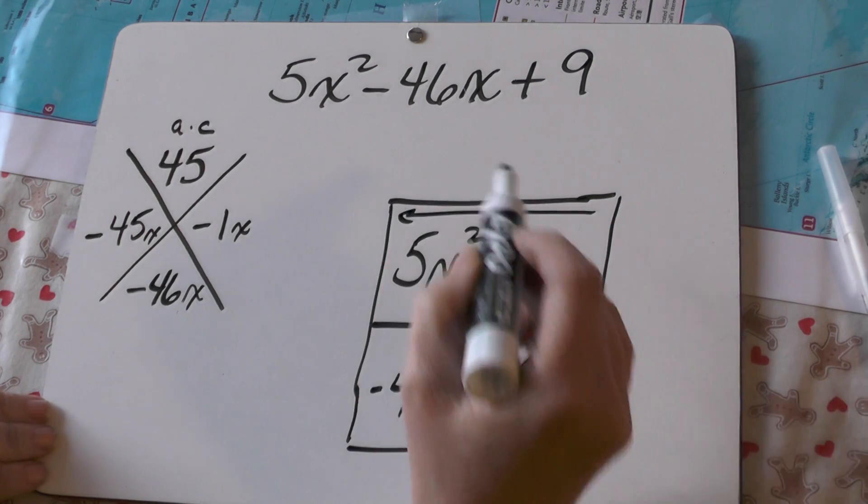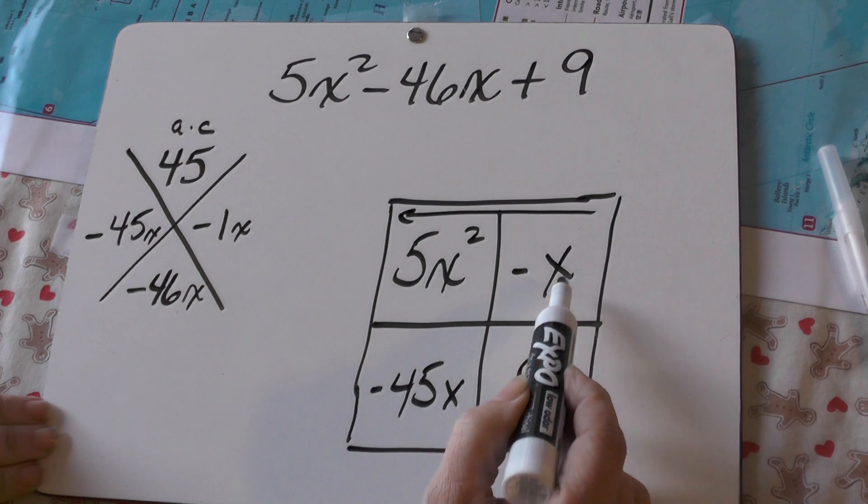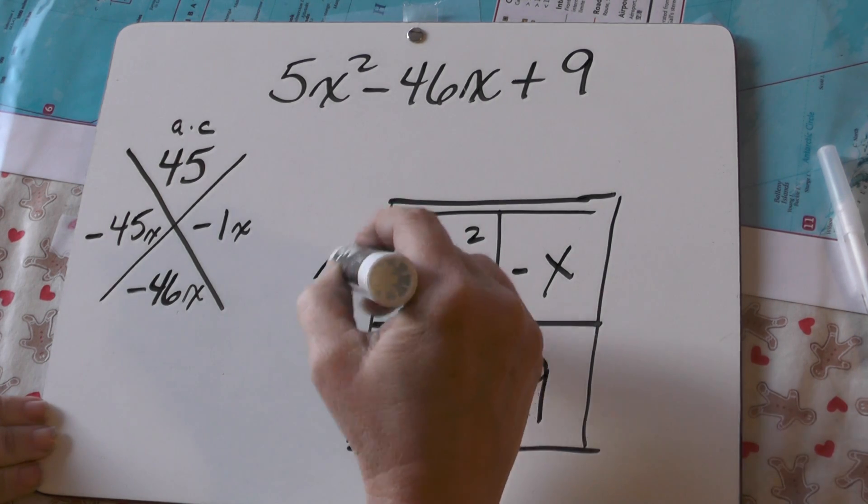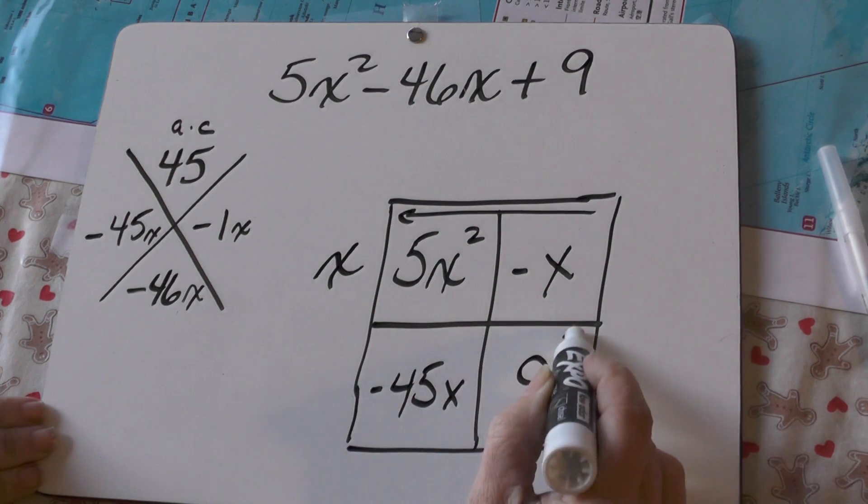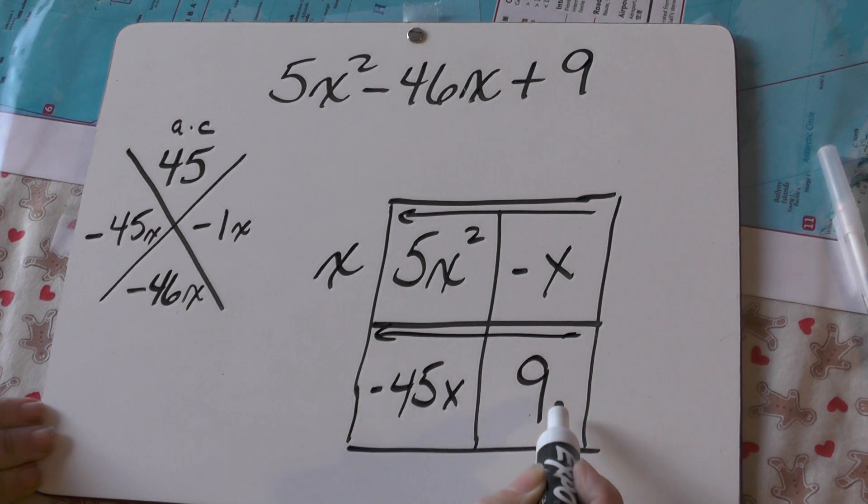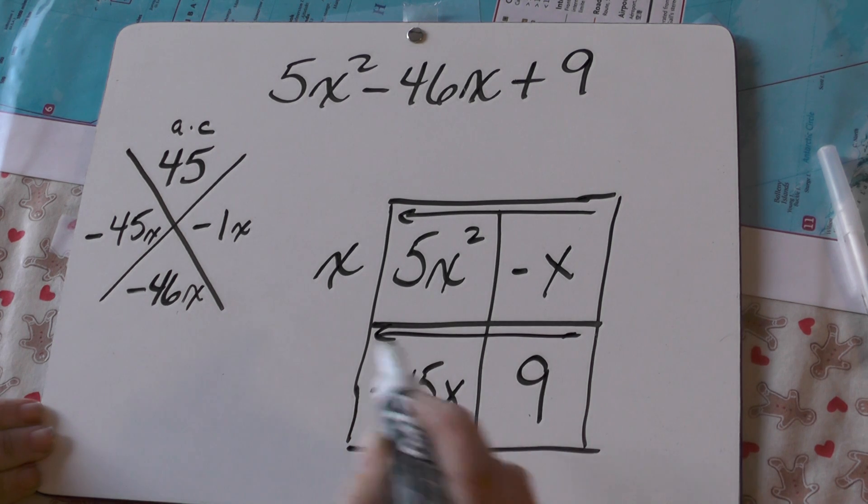So, this way, 5x and x. All I can pull out of that is an x, right? Going this way, negative 45 and 9. What can I pull out of that? A 9. This is 5 times 9.